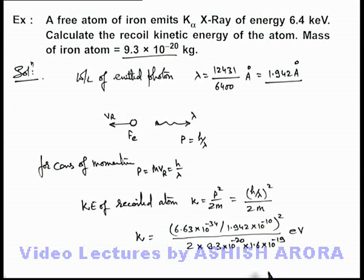On simplifying the numerical values, finally we get 3.9 into 10 to the power minus 10 electron volts. That will be the answer to this problem. This is the kinetic energy of the recoiled iron atom.